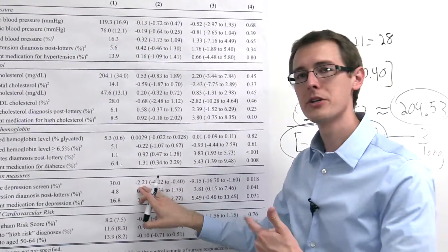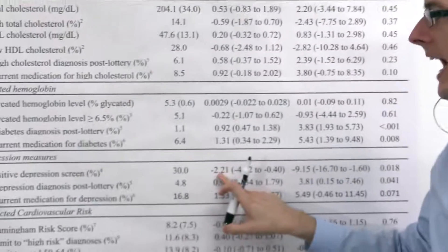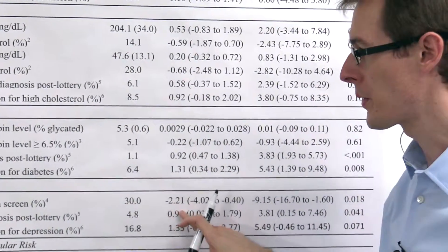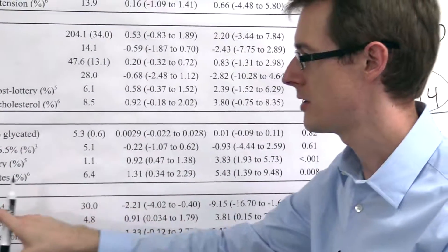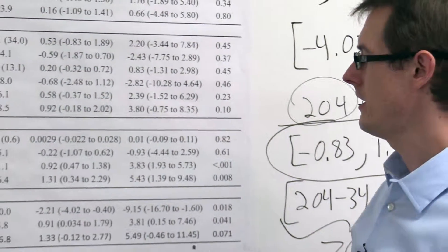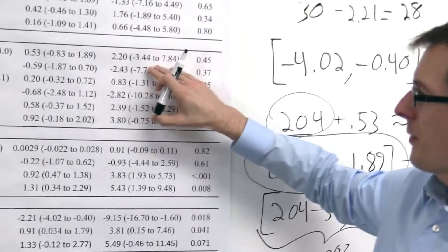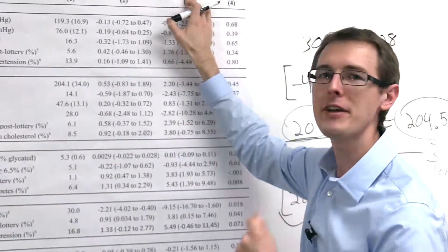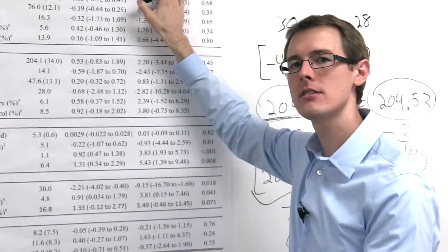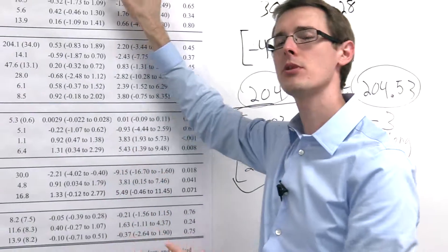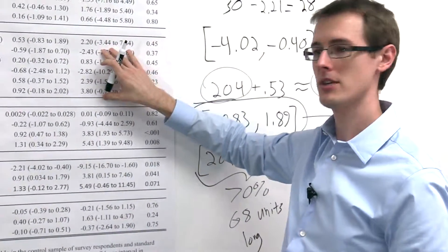So these are average treatment effects not of having Medicaid, but of being selected to have the option of enrolling in Medicaid. So, really the proper interpretation of this is that being given the option of enrolling in Medicaid lowers the average depression by minus 2.21. In this column here with the instrumental variables analysis, they're going to get at the actual effect of having Medicaid, not just the effect of being given the option. But we're going to do a much more complicated analysis to get to these numbers later on.